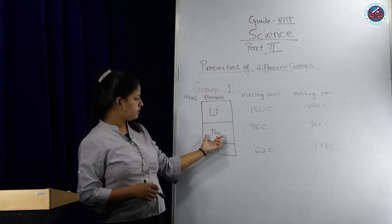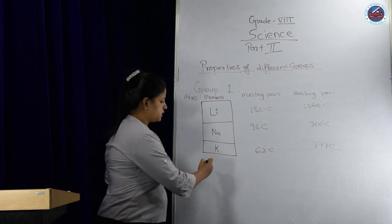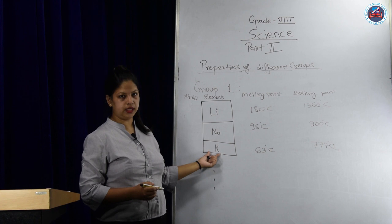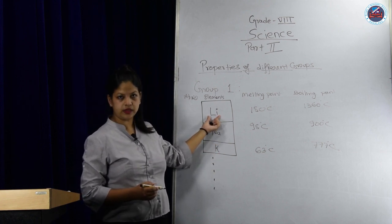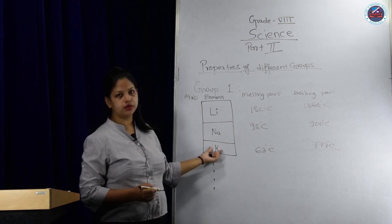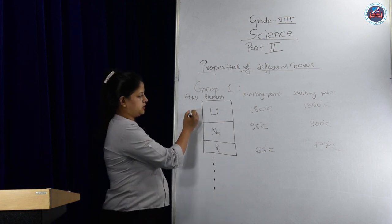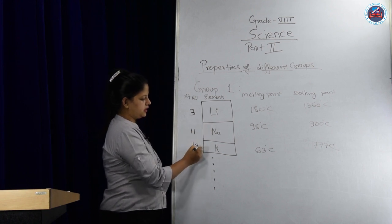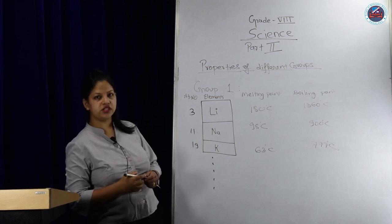These are the elements of group 1, it continues down but we are checking for 3 elements only. Li stands for lithium, Na for sodium, and K for potassium. Their atomic numbers are 3, 11, and 19 respectively.